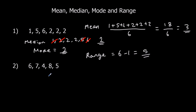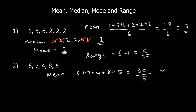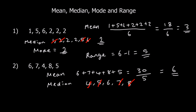Second example. The mean — add them all up, divide by how many. 6 plus 7 plus 4 plus 8 plus 5. They add up to 30, divided by 5 numbers, so it's 6. The median is the middle number. In order: 4, 5, 6, 7, 8. Cross them off from both sides. The median is also 6.